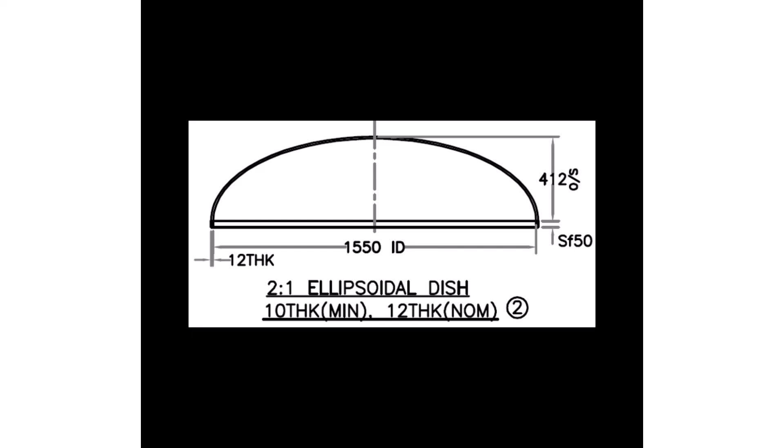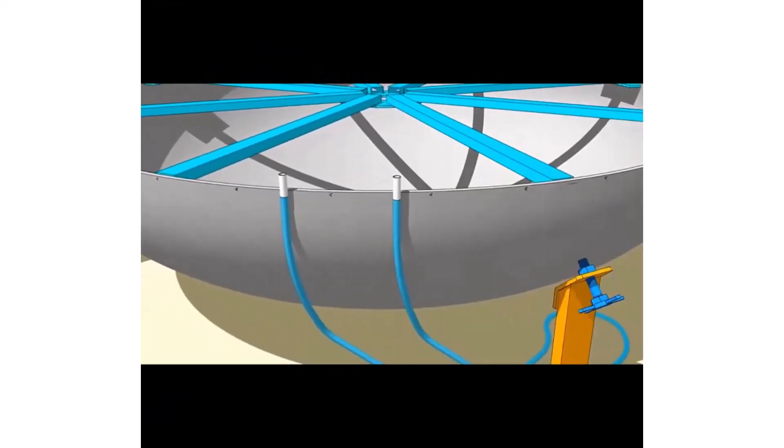Read the drawing for the height of the dish end. Use a flexible, transparent tube filled with water to transfer the level around the dish end.